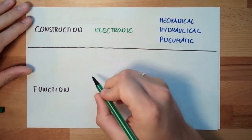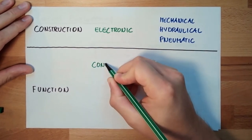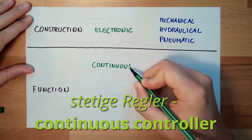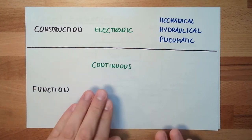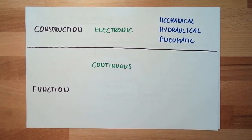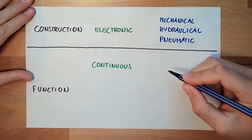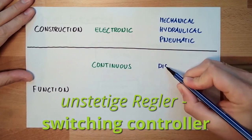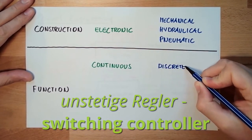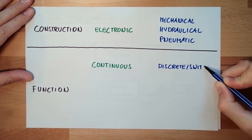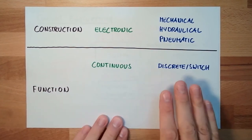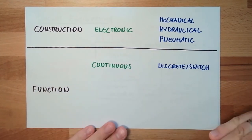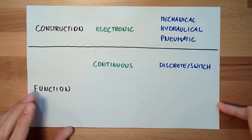So these are already the two possibilities: continuous control systems, where the correcting variable is a continuous variable, and discrete or switching control systems, where the correcting variable only has discrete values — the most simple being zero and one.